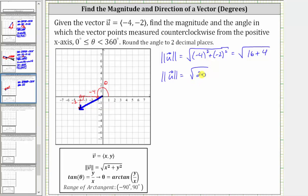However, we should simplify if possible. This will simplify if 20 has any perfect square factors. Since 20 equals four times five, and four is a perfect square, this will simplify.